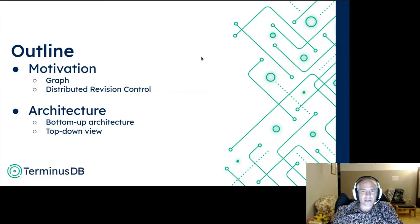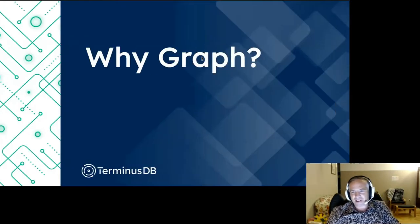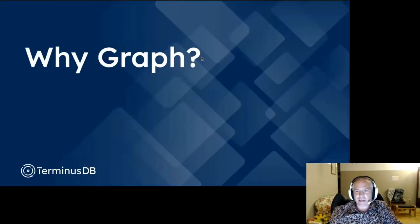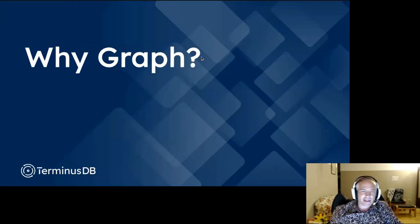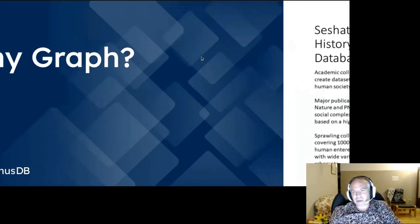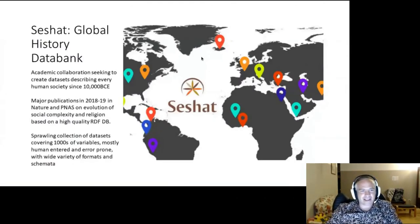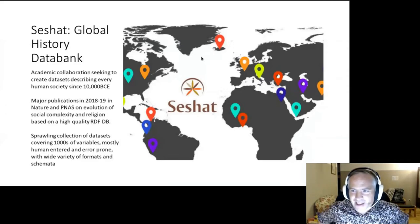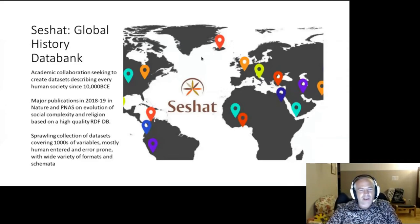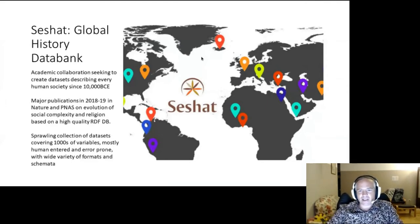The first question is: we're a graph database, so why graph in the first place? There are a lot of people who are really into relational databases — I would have fallen into that class — so I know a lot of the positives, but there are also advantages to graph databases as well.